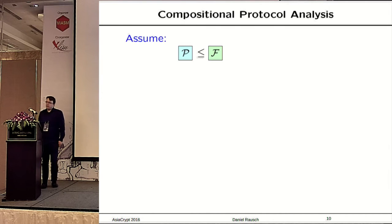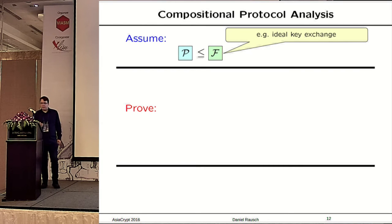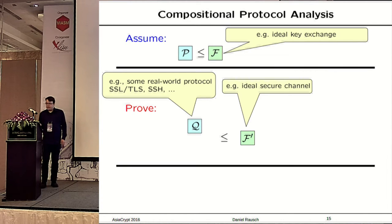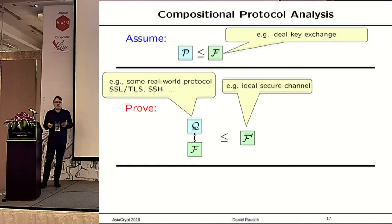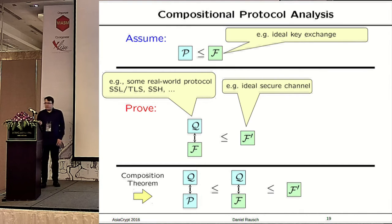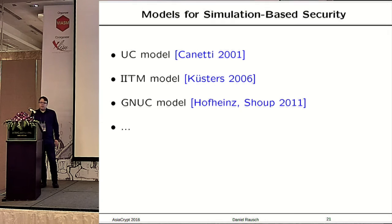Modularity works roughly as follows. Suppose we have shown that protocol P realizes ideal functionality F — for example, a key exchange protocol. We now want to build another protocol Q serving a different purpose, say a secure channel protocol. Q can reuse the ideal functionality F to show it can realize a secure channel. Once shown, we use the composition theorem to conclude that replacing F with its realization P still yields a secure channel. We can iterate this — building a protocol on top of F', then replacing F' with its realization Q and P. There are many different models using this approach.